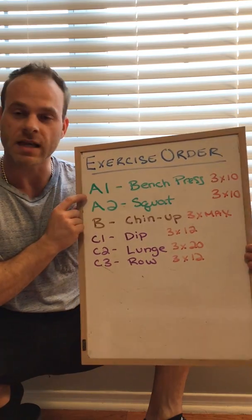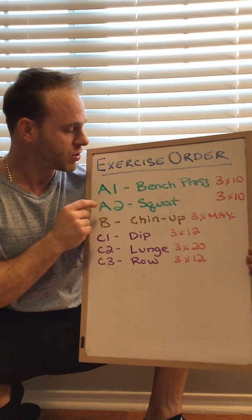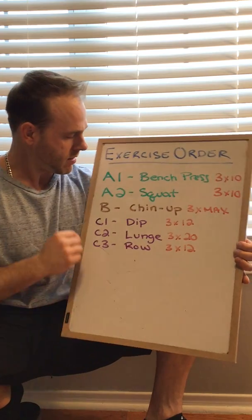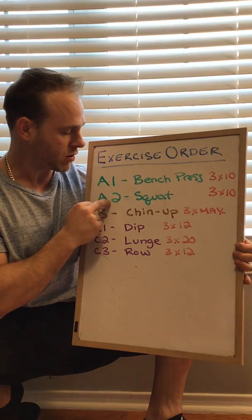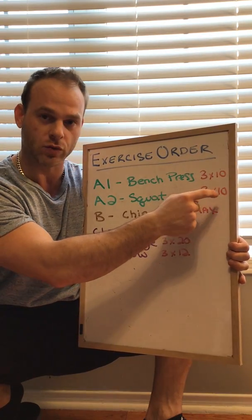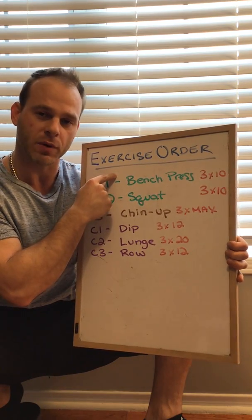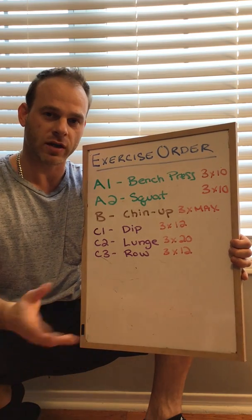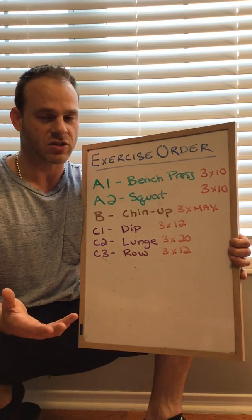In this example, you can see A1 and then A2. A1 is a bench press — it's three sets of ten. What you're going to do is do a set of ten on the bench press, then rest, and then go into your A2, which is your squat, also three sets of ten. Do your set of ten, then link back up to A1, go back to your bench press, and repeat back to your squat until you're done each set. So you're alternating A1 and A2 until all the sets are done.